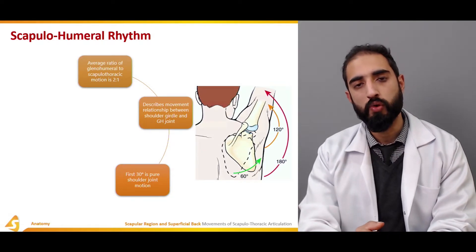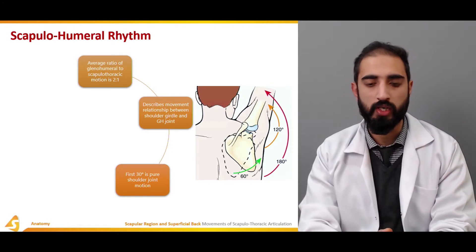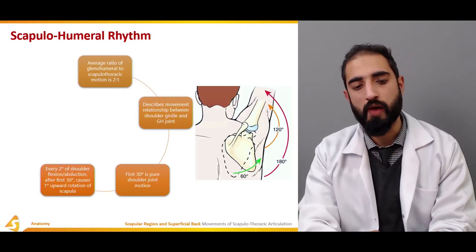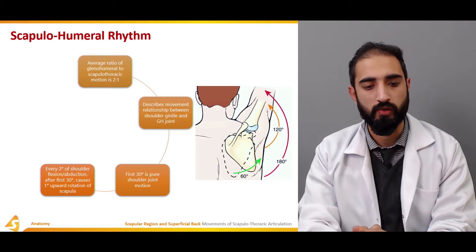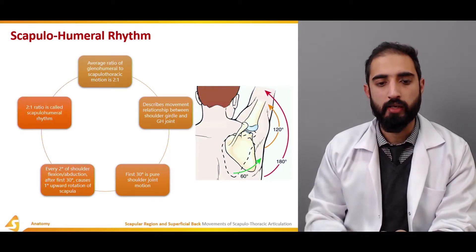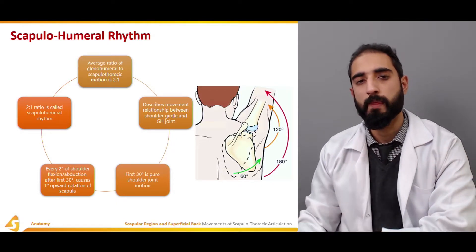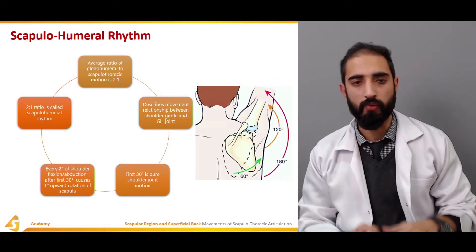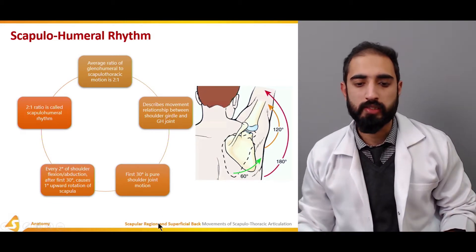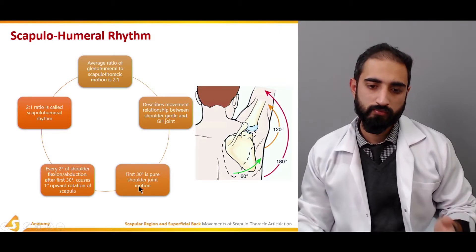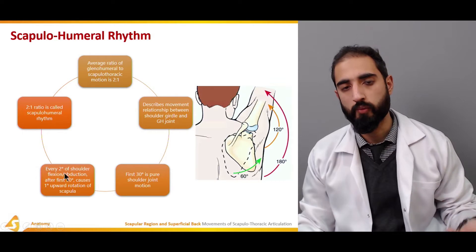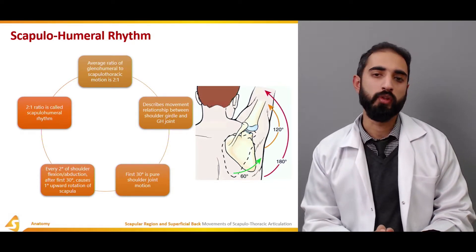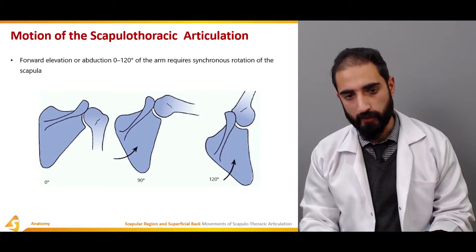This ratio describes the movement relationship between the shoulder girdle and the glenohumeral joint. The first 30 degrees is pure shoulder joint motion — for example, when initiating abduction or elevation. After the first 30 degrees, every two degrees of shoulder flexion or abduction causes one degree of upward rotation of the scapula. By the end of elevation, the ratio becomes 1:1. Overall, when simplified, the general ratio is 2:1 for scapulohumeral rhythm.